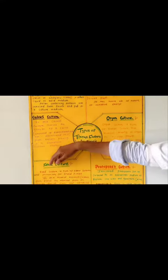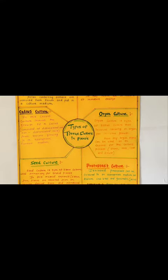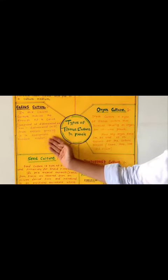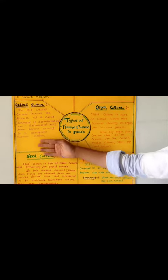Third, callus culture. In this callus culture involves the growth of callus that is composed of differentiated and non-differentiated cells from the explant growing it into the appropriate nutrient medium.